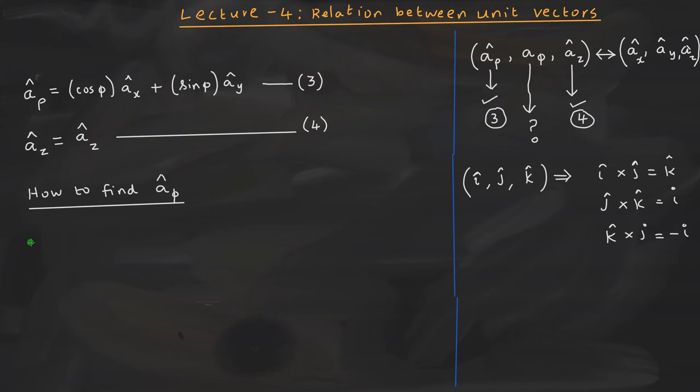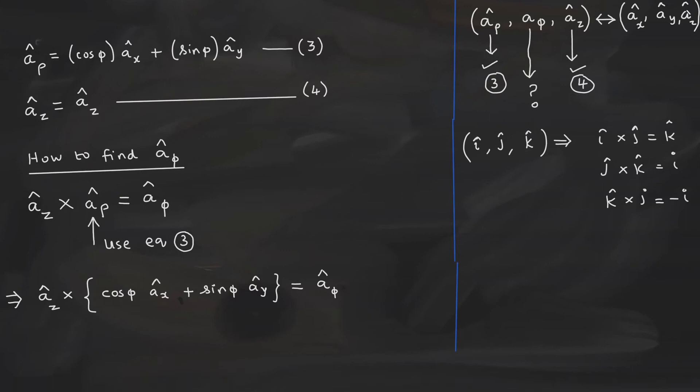Let me write down here. We can calculate like this. If you take the az unit vector, take a cross product with a rho unit vector, then that must give you a phi. That gives you, let us substitute this az. Az will be az only. You keep that az cross. You write down the entire equation for the a rho and that is all. Now you have to simplify.